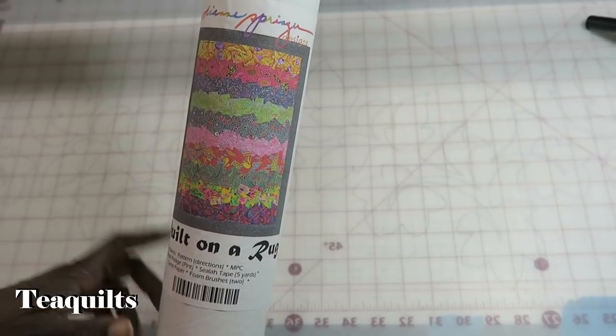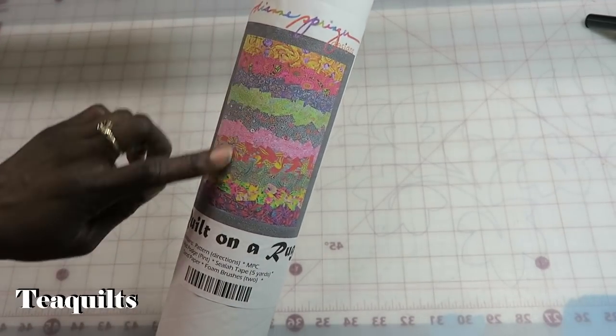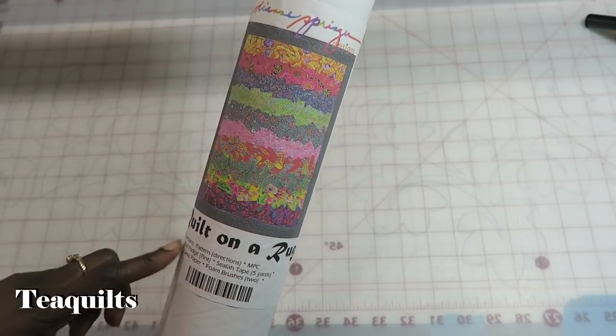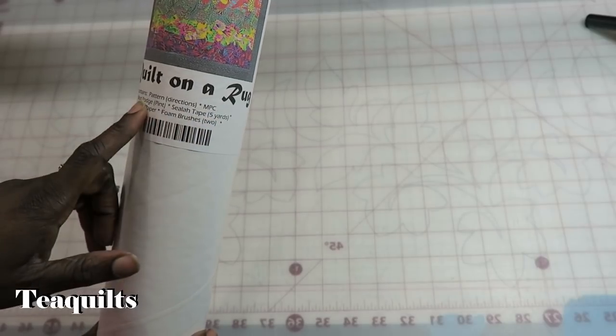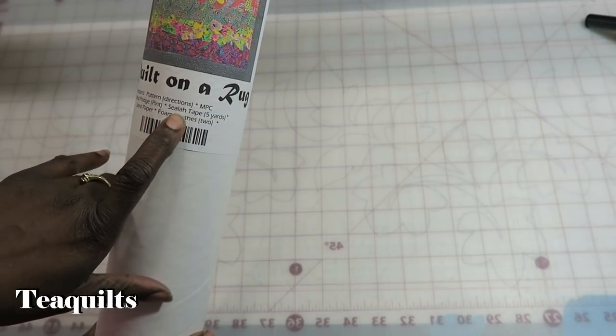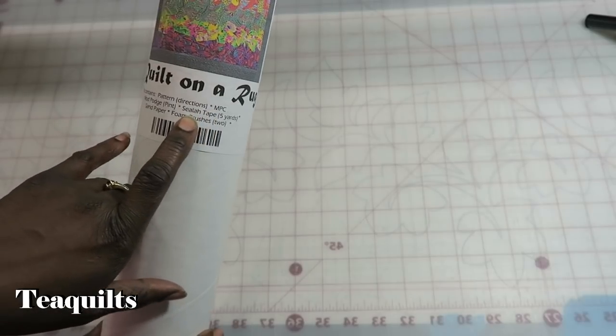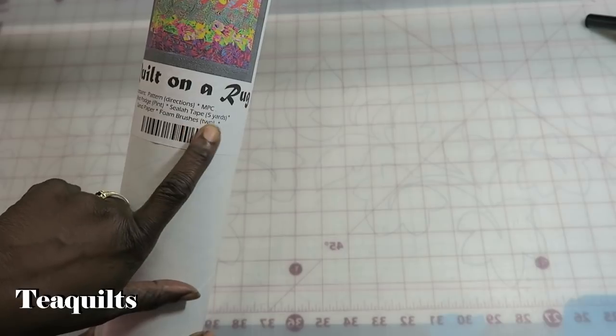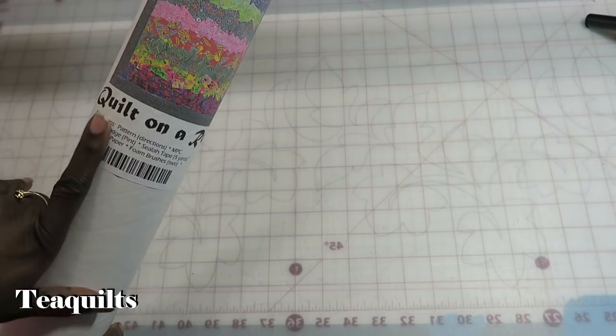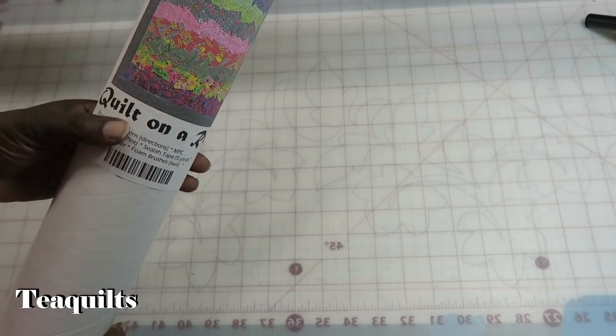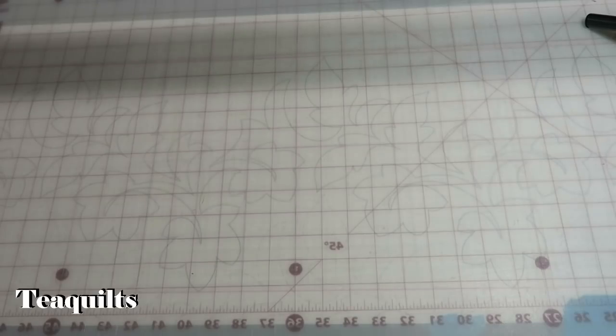Another thing I got is a quilt on a roll. And it's really a rug that you make. This kit contains the pattern, directions, MPC, Mod Podge, some kind of tape. I've never heard of this seal off tape. And it's five yards of that sandpaper and foam brushes for two. So all I have to add is my fabric and probably a gloss coat to finish. And it doesn't say on here what size the rug makes. So I'm assuming that all of that is inside the tube.